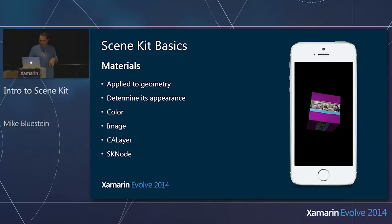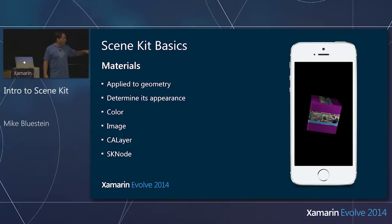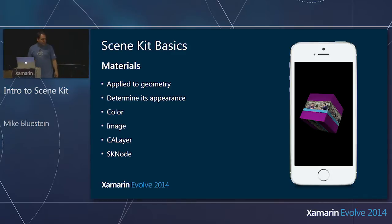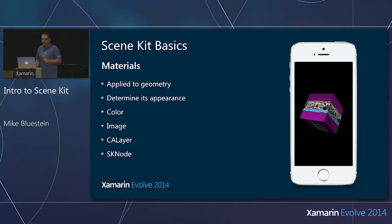But there's more. I can attach a CA layer to the material. Using Core Animation — a CA layer — I can play a video: here I'm playing a video of my buddies James and Aaron. You can create a cube with video playing on the surface, animating and rotating. I can apply a CA layer to the material.